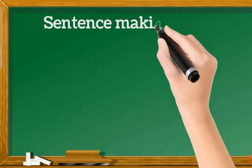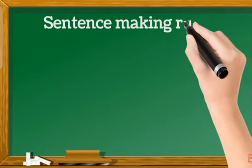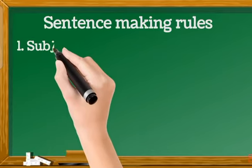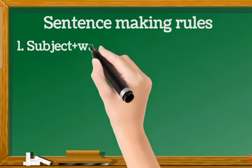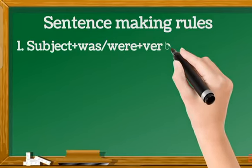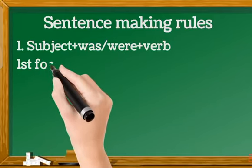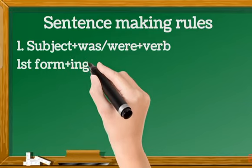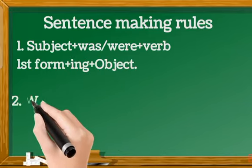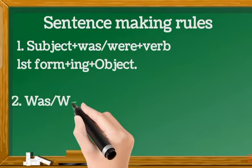Sentence making rules. First one: subject plus was or were plus verb first form plus ing plus object. Second one...